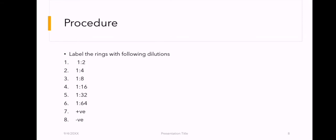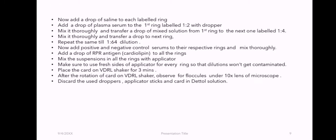Procedure: Label the rings with the following dilutions — 1:2, 1:4, 1:8, 1:16, 1:32, 1:64, positive, and negative. Add a drop of saline to each labeled ring. Add a drop of plasma or serum to the first ring labeled 1:2 and mix thoroughly. Transfer a drop of the mixed solution to the next ring labeled 1:4. Repeat this serial dilution until reaching the 1:64 dilution.